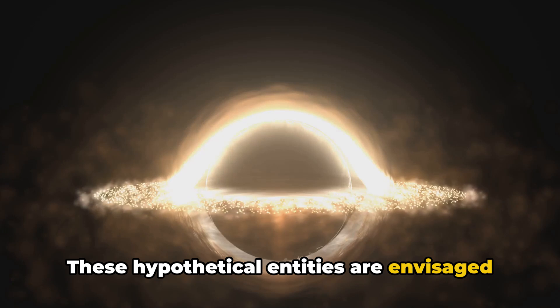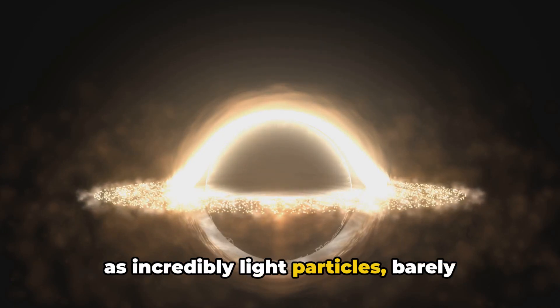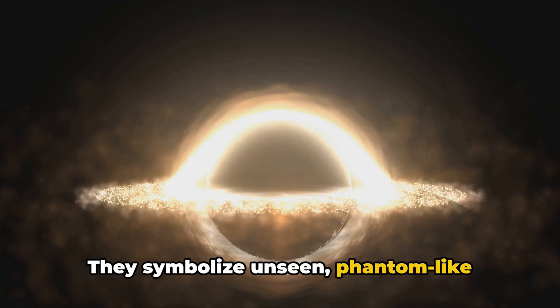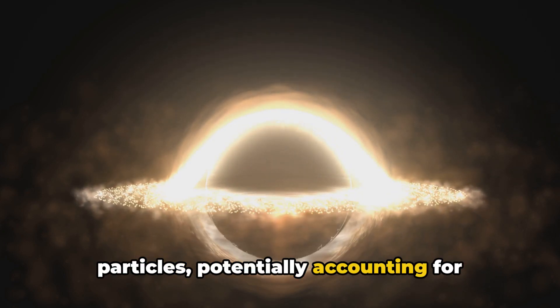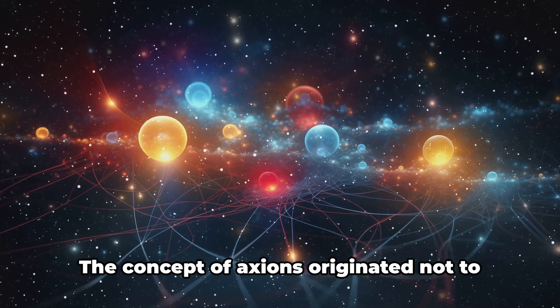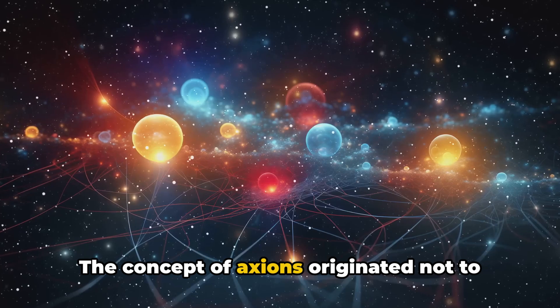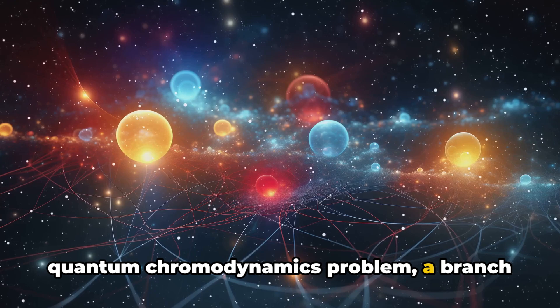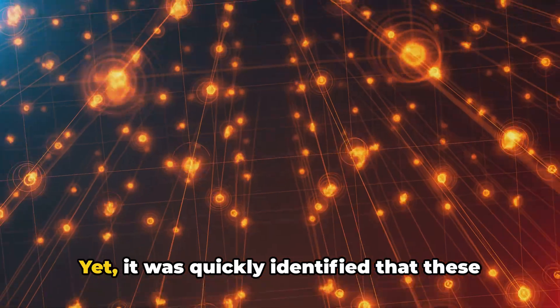These hypothetical entities are envisaged as incredibly light particles, barely interacting with normal matter. They symbolize unseen, phantom-like particles, potentially accounting for elusive dark matter. The concept of axions originated not to explain dark matter, but to address a quantum chromodynamics problem, a branch of physics.